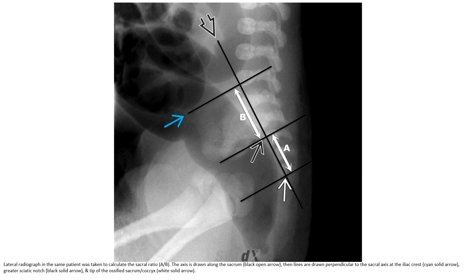A lateral radiograph in the same patient is used to calculate the sacral ratio. An axis is drawn along the sacrum, then lines are drawn perpendicular to the sacral axis at the iliac crest and greater sciatic notch, and the tip of the calcified sacrum is identified.